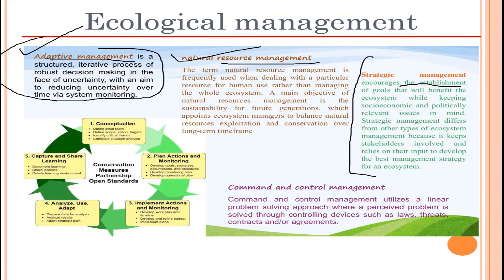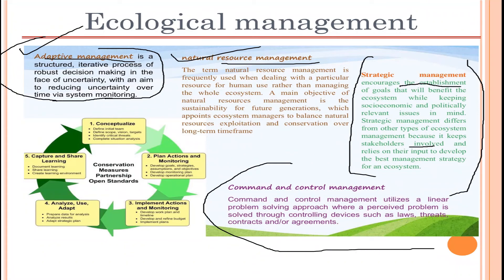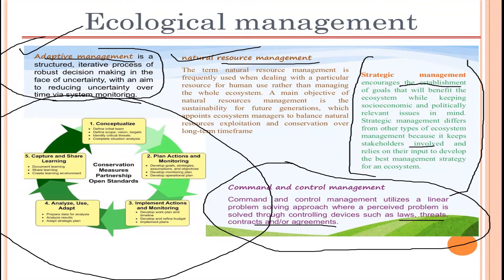Strategic management encourages the establishment of goals that will benefit the ecosystem while keeping socio-economic and political issues in mind. It differs from other types because it keeps stakeholders involved and relies on their input to develop the best management strategy. Command-and-control management utilizes a linear problem-solving approach where a perceived problem is solved through controlling devices such as laws, threats, and contracts or agreements. These are management techniques that can be incorporated to solve the ecological crisis.